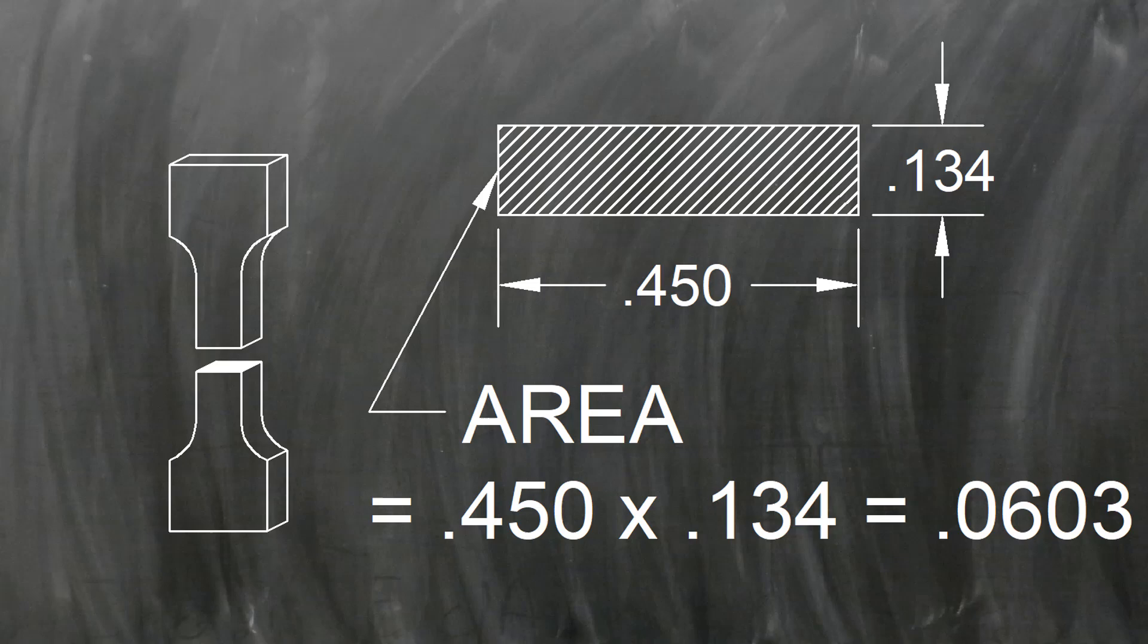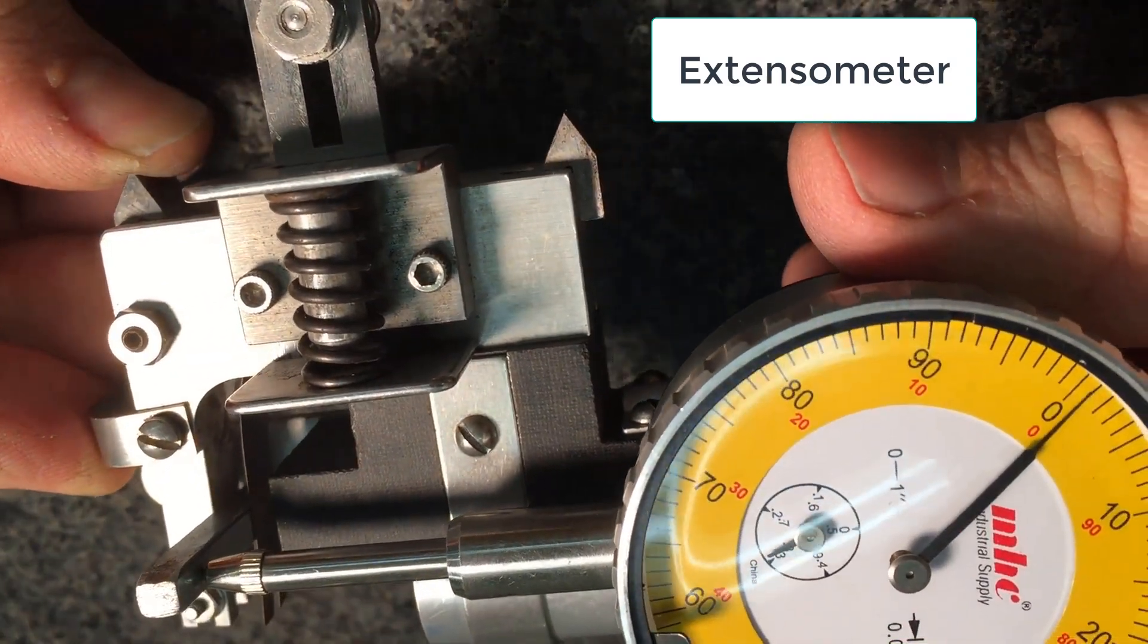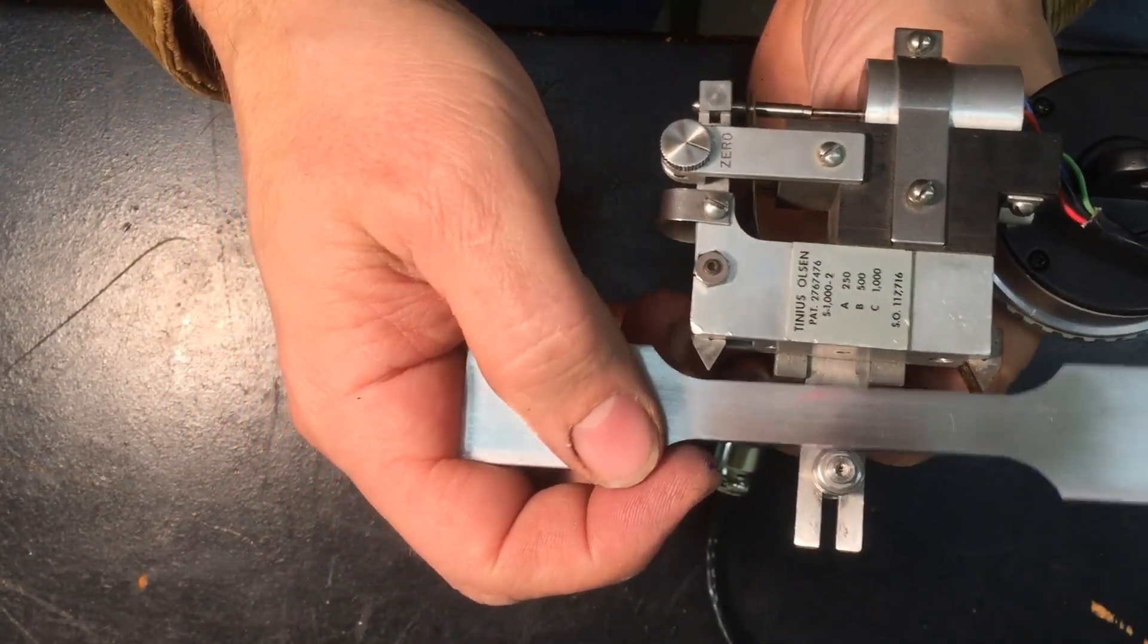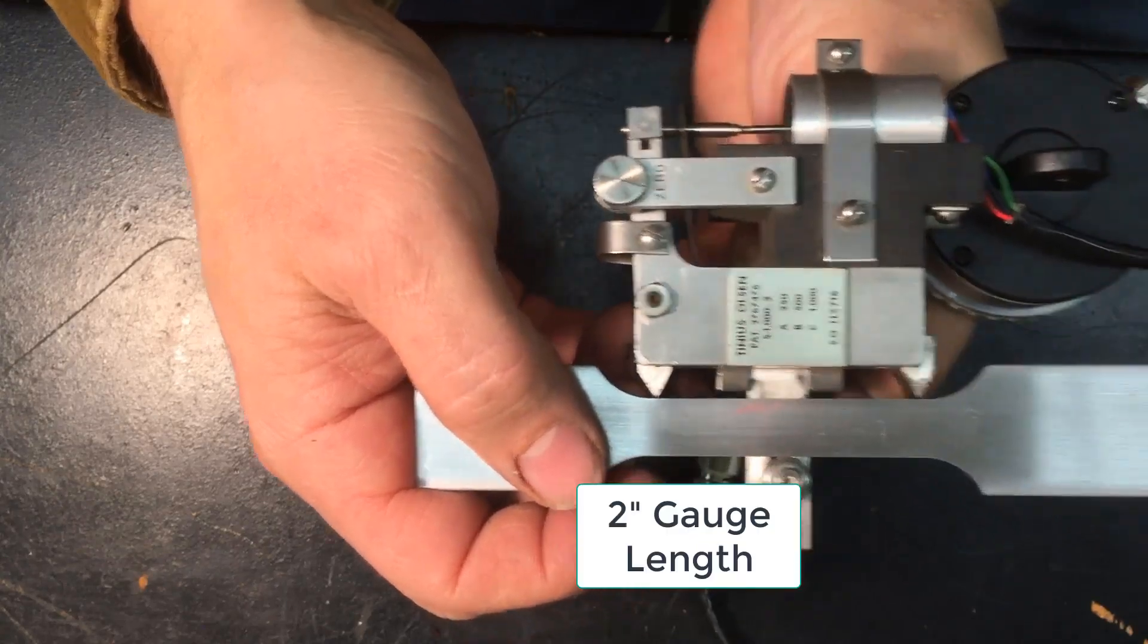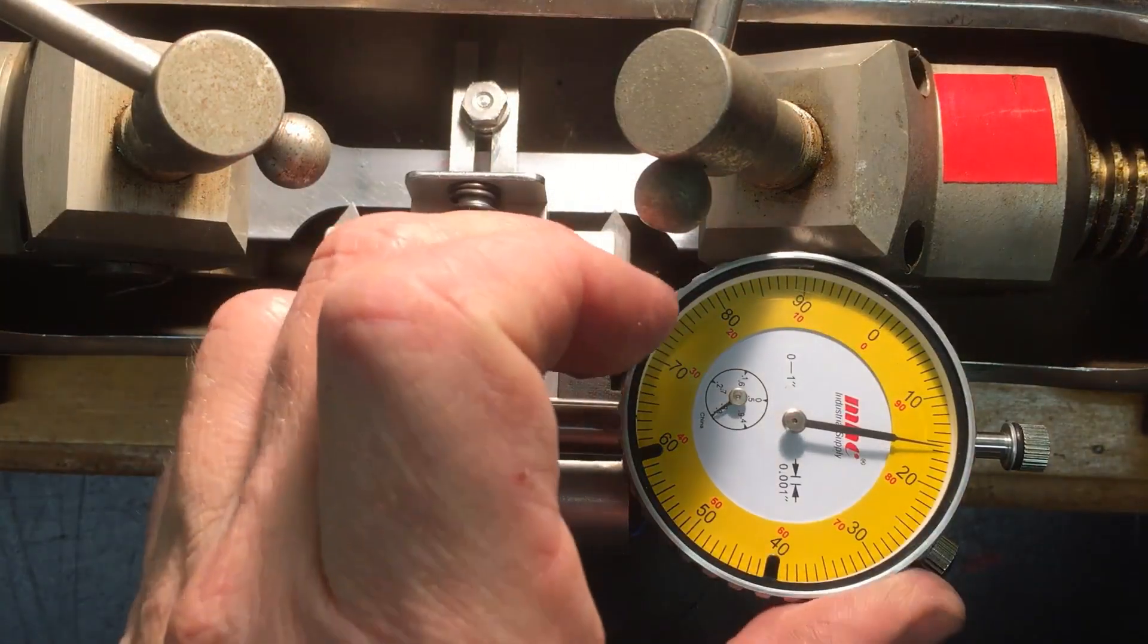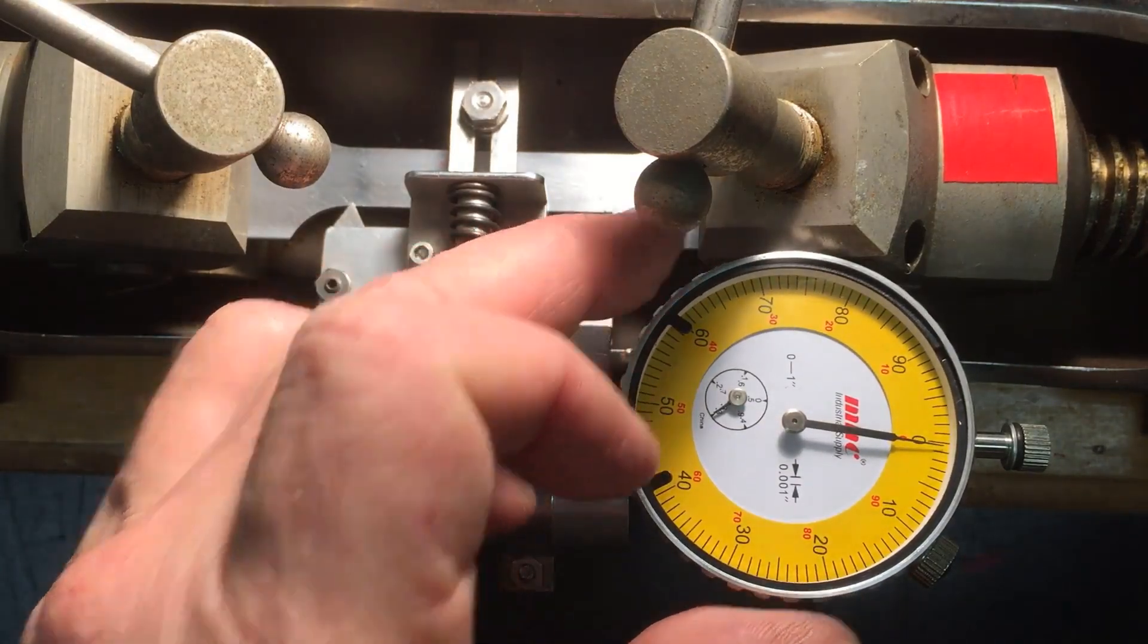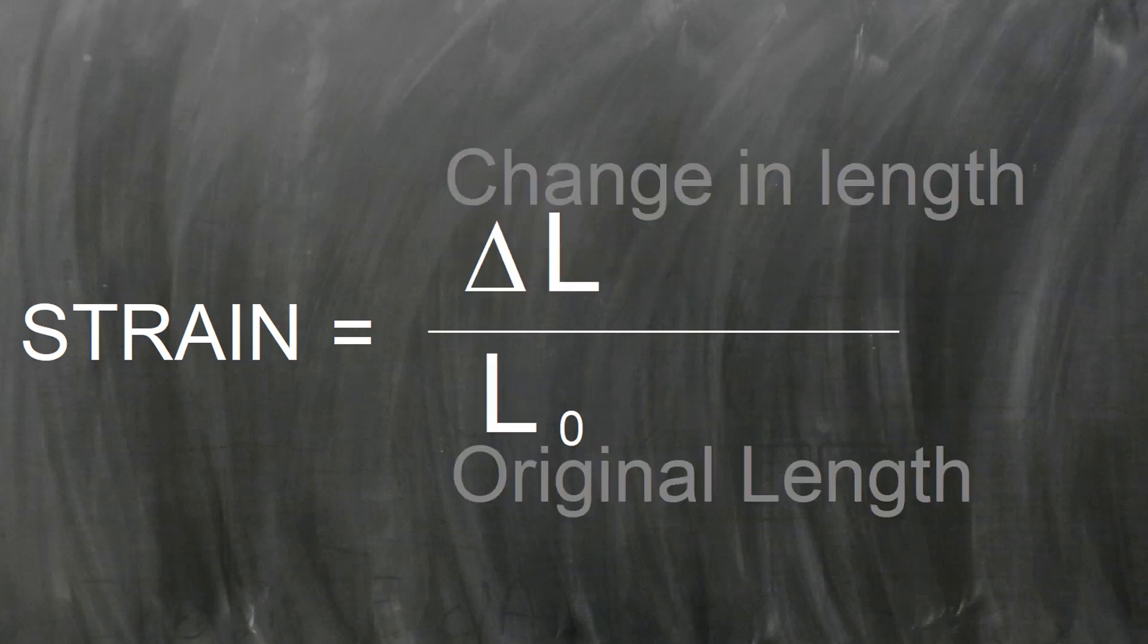We'll want to know about strain too. This device called an extensometer will measure how much the specimen is stretched. We'll set it so that these knife edge prongs are two inches apart. We'll call this the gauge length. And this will be our original length. Then we'll measure the amount the dial moves and divide by our two inch gauge length. Remember that strain is the change in length divided by the original length.